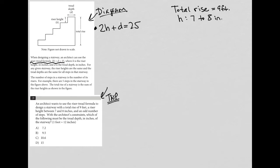I am going to convert this 9 feet into inches. 9 feet times 1 foot on the bottom so that the units cross out. 1 foot is equivalent to 12 inches, so that's my conversion factor. 9 times 12 is 108, so my total rise is 108 inches.